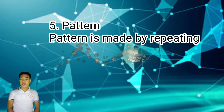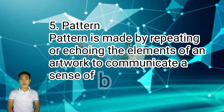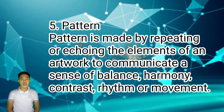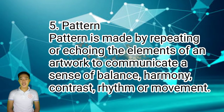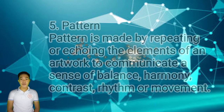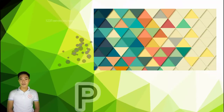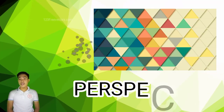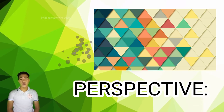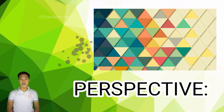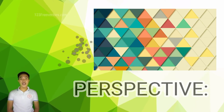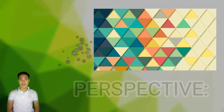Number five is pattern. Pattern is made by repeating or echoing the elements of an artwork to communicate a sense of balance, harmony, contrast, rhythm, or movement. In other words, pattern makes our visual designs more uniform and appealing as it possesses a static value and sense of balance.